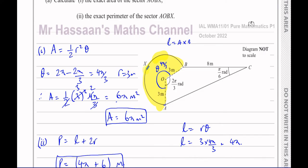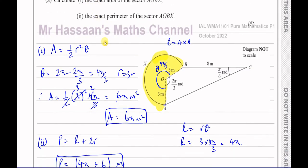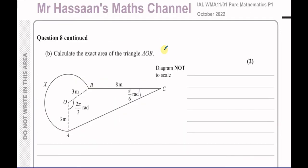Be careful to include those lines when talking about the perimeter of this sector. If it were the perimeter of the whole shape, we wouldn't include those two lines. That's parts 1 and 2 done. Now for part B.